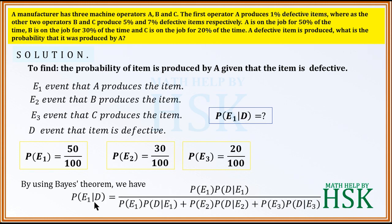By Bayes' theorem, P(E1 | D) equals P(E1) × P(D | E1), divided by P(E1) × P(D | E1) + P(E2) × P(D | E2) + P(E3) × P(D | E3). We now need to calculate each of the conditional probabilities P(D | E1), P(D | E2), and P(D | E3).